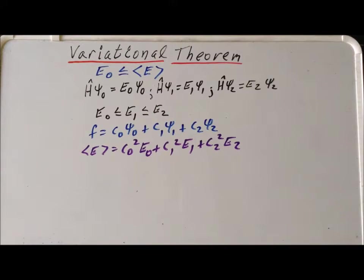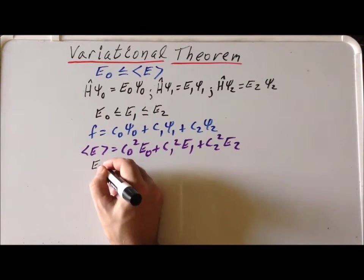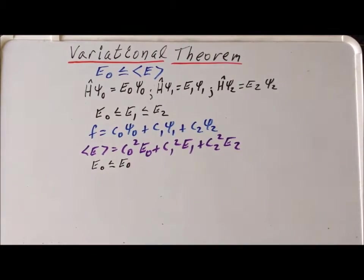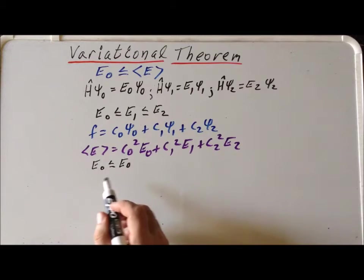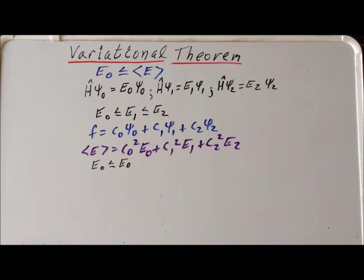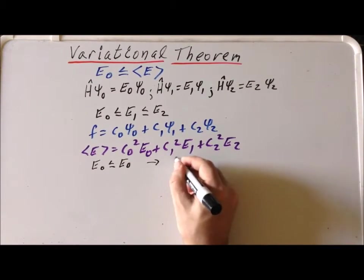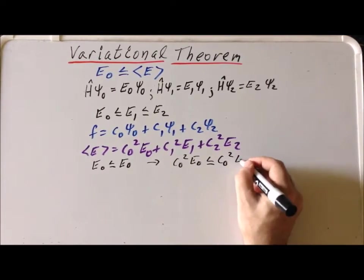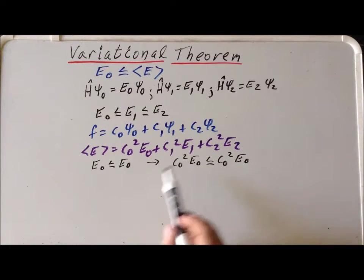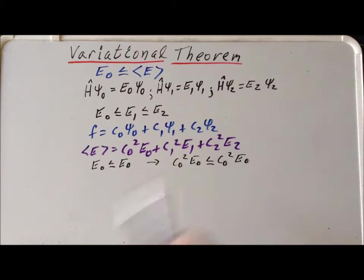The next step is very non-intuitive and may seem strange at first, but it is clearly true that E sub 0 is greater than or equal to E sub 0. We know this has to be true because E sub 0 is equal to E sub 0, so it must definitely also be true that E sub 0 is greater than or equal to E sub 0. The trick now is to multiply each side of this inequality by C sub 0 squared, which gives us C sub 0 squared times E sub 0 is less than or equal to C sub 0 squared times E sub 0. This is legitimate because C sub 0 squared is a non-negative real number, so it doesn't change the direction of the inequality.